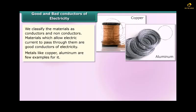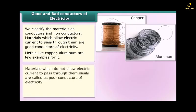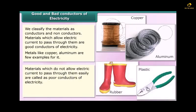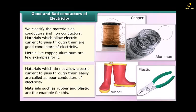Materials which do not allow electric current to pass through them easily are called poor conductors of electricity. Materials such as rubber and plastic are examples of this. We use a tester to test the conductivity of materials which are in solid state.